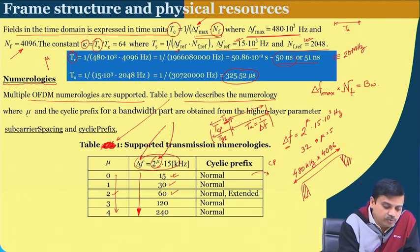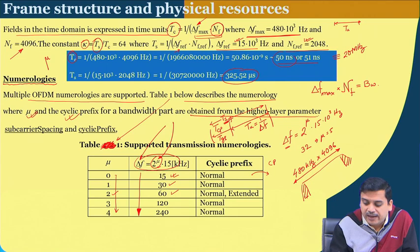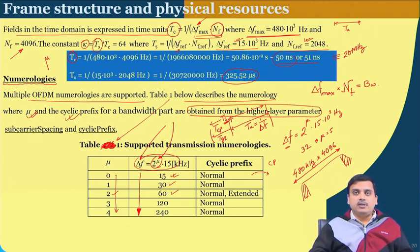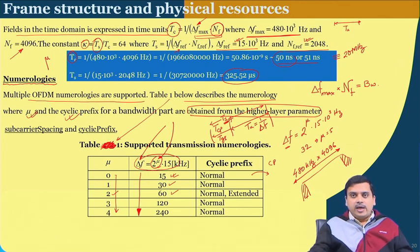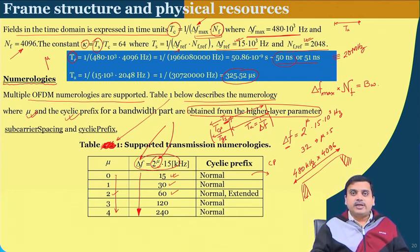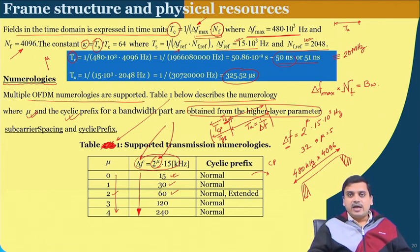The choice of parameter mu and cyclic prefix are obtained from higher layer parameters — something above the physical layer can provide these choices. If these two choices are given, you can describe an entire OFDM symbol. In the 5th generation, this aspect is exploited: things are not kept constant, so there is a lot of potential to use OFDM in a flexible manner depending on the propagation environment and deployment needs.